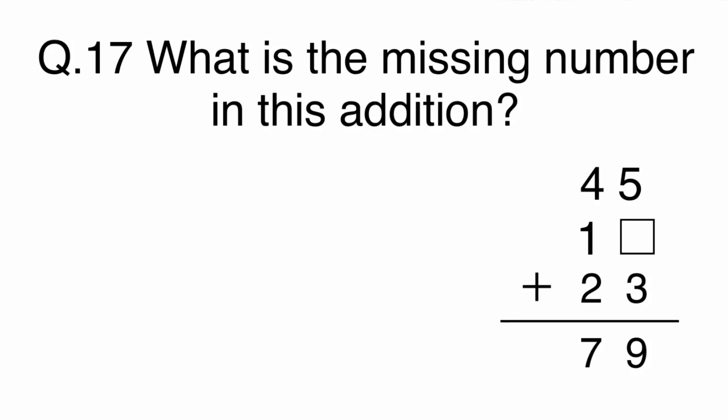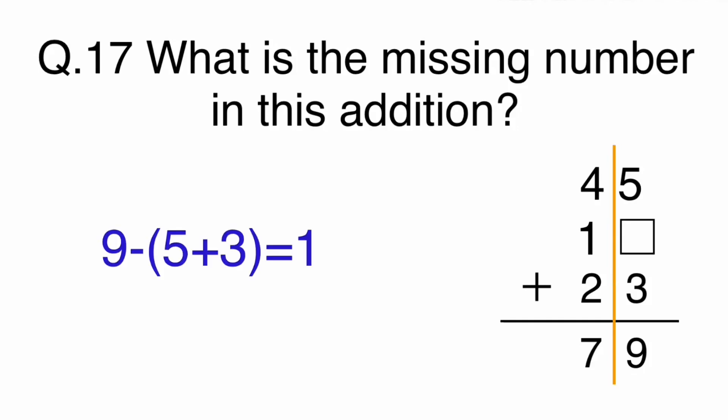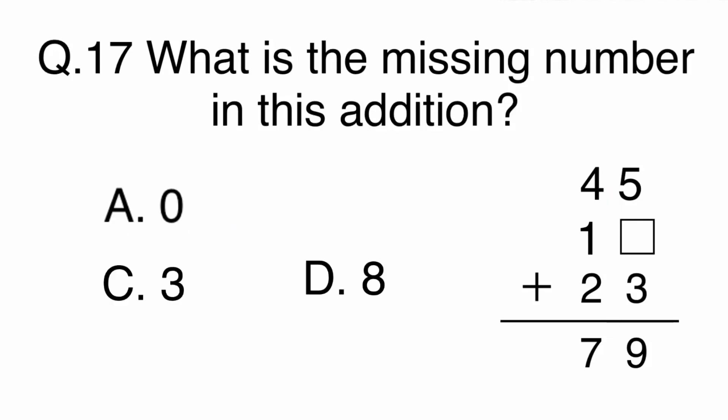For this question, let's focus on the ones column. You must add 5 and 3 together, which equals 8. The total is 9. Then take 8 away from 9 to get the answer. The answer is B, 1.